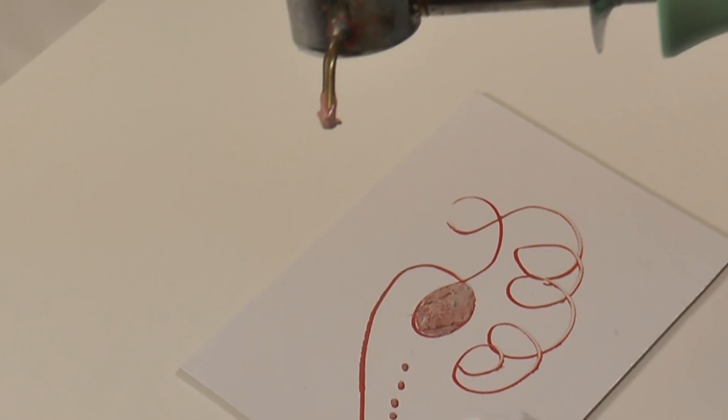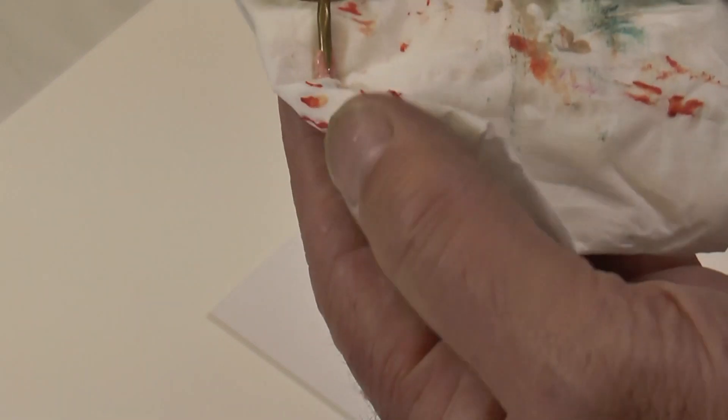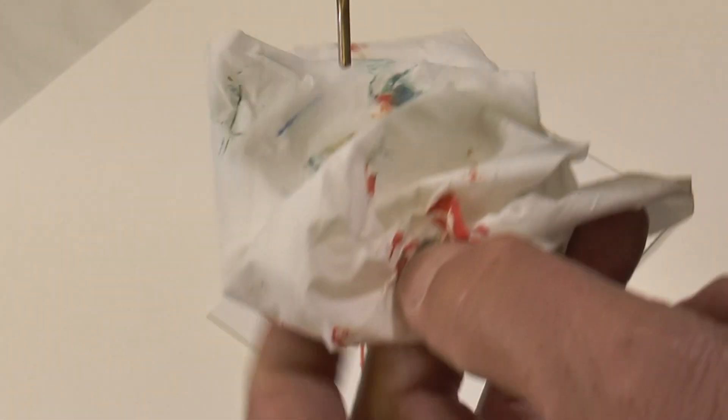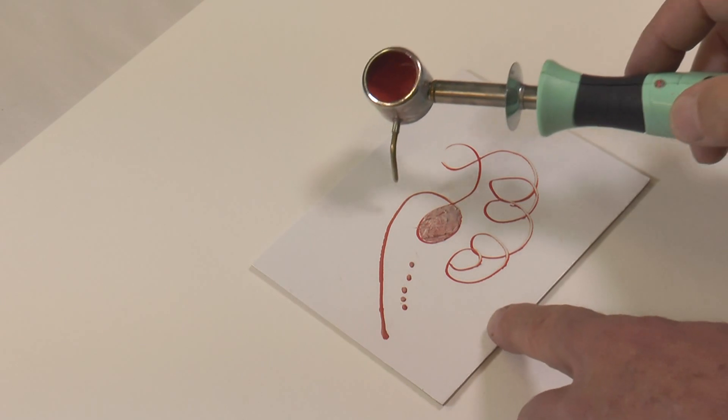When you're working you can pick up deposits on the end of the pipe. This is congealing wax, so just wipe it off with a piece of tissue. And you may find that you have to tap the end to get it to start flowing again.